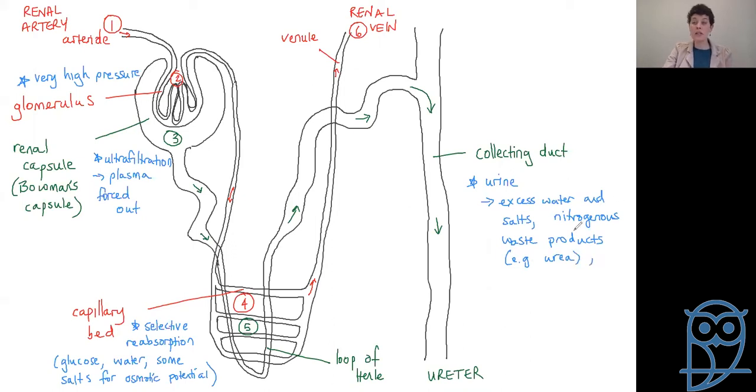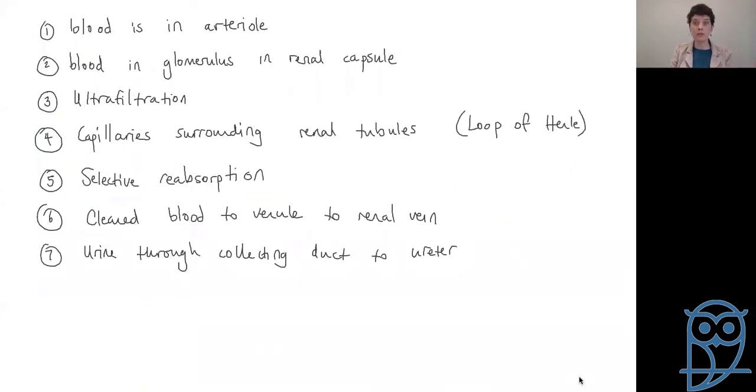So then we split - we have our clean blood going to the renal vein, and we have our urine heading towards the collecting duct. And here we can say we have urine, and that is our excess water and salts, it is our nitrogenous waste products which is urea and friends. And it is - we said at the beginning - urine can also include hormones and drugs that are being excreted from the body.